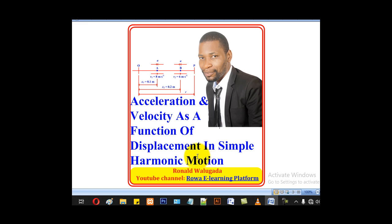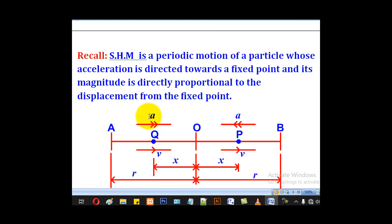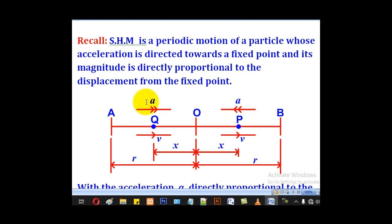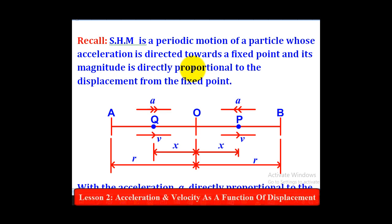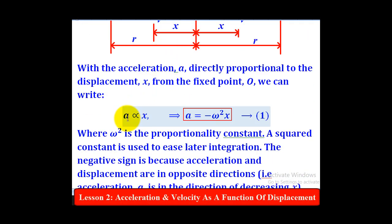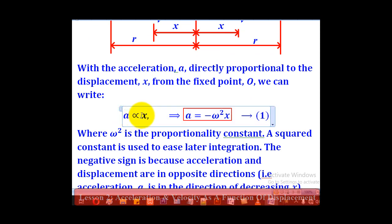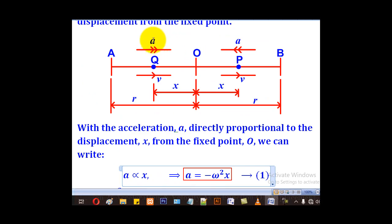Previously in lesson 1, we saw that simple harmonic motion is a periodic motion of a particle whose acceleration is directed towards a fixed point and its magnitude is directly proportional to the displacement from the fixed point. That shows that acceleration is directly proportional to x, which is the displacement from the fixed point.